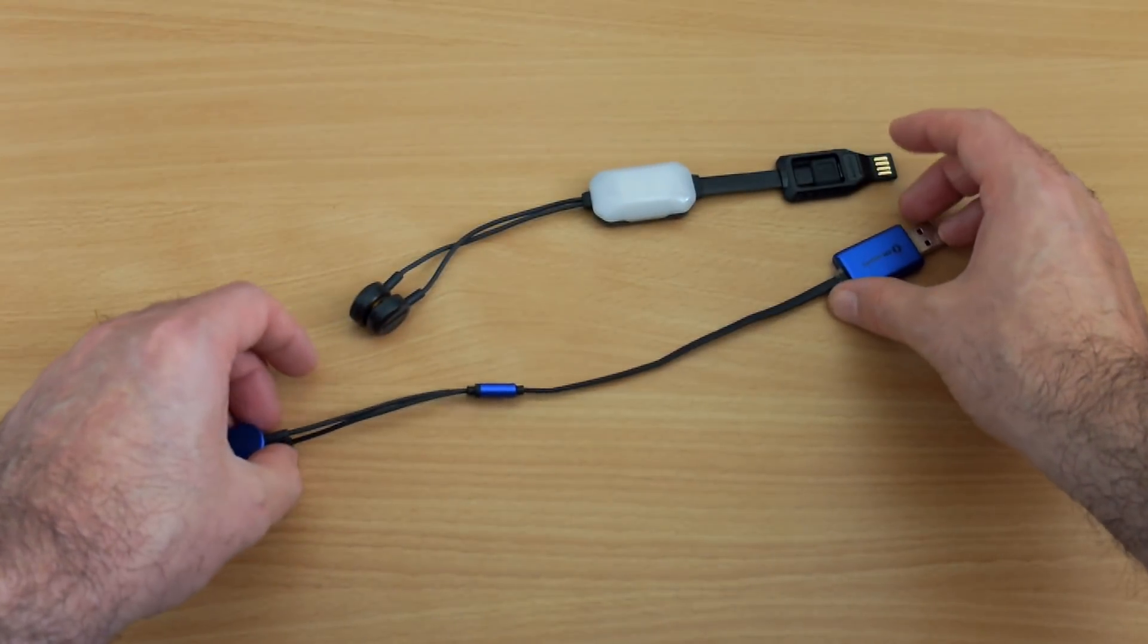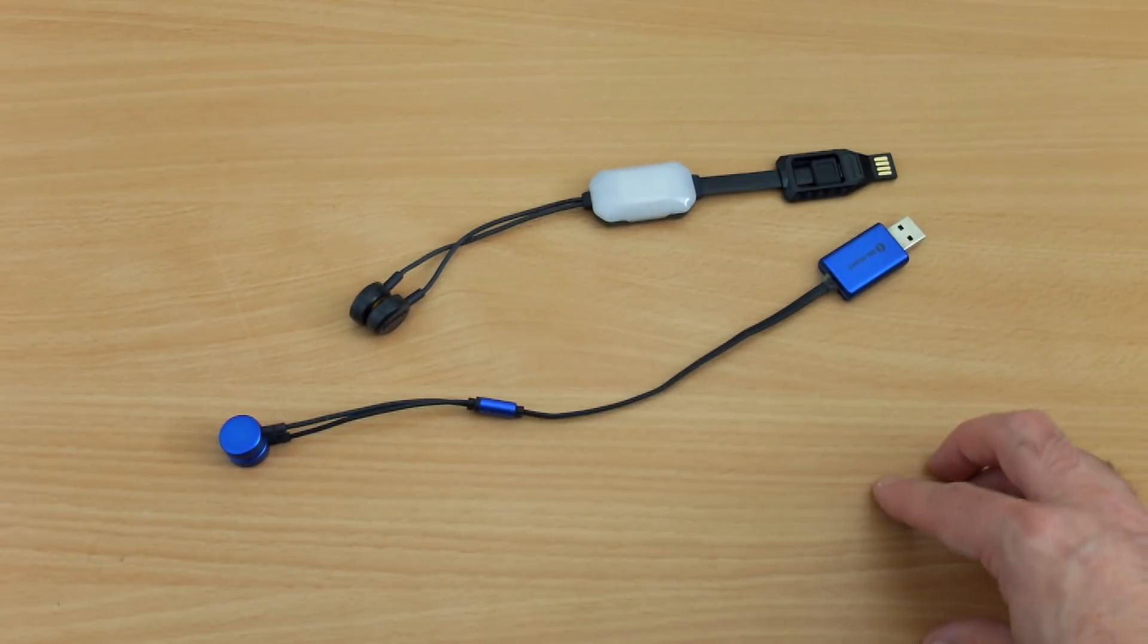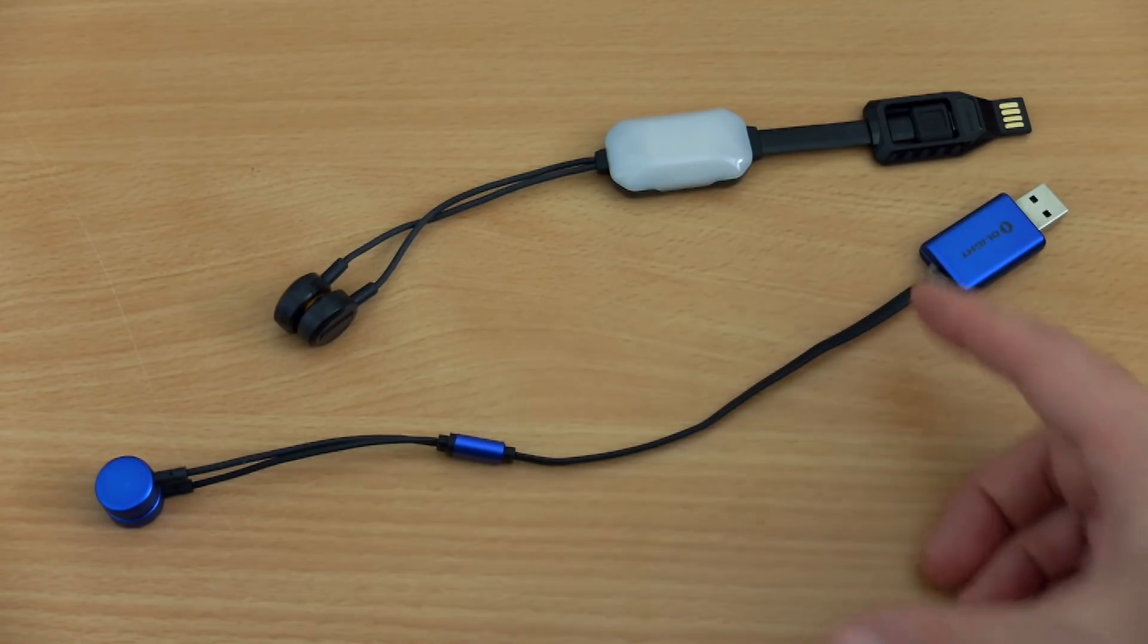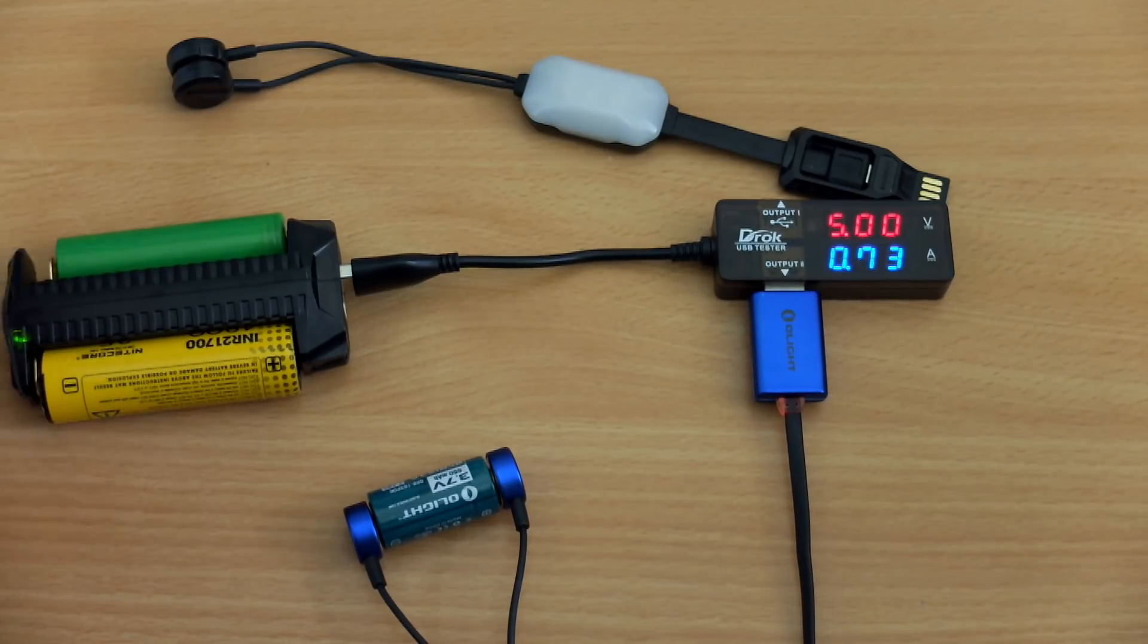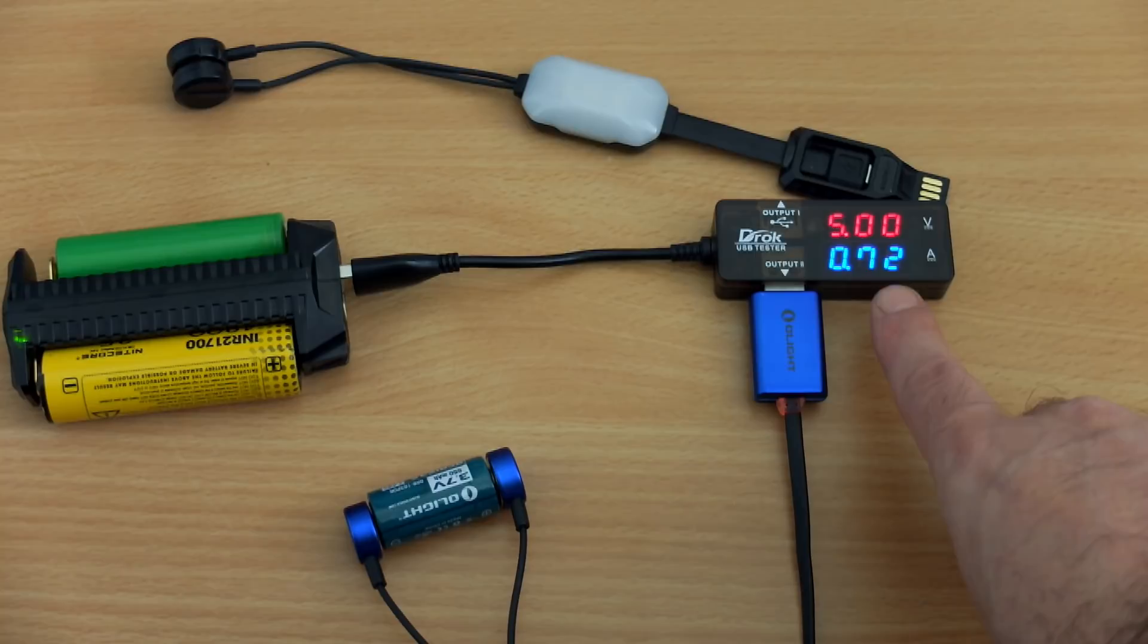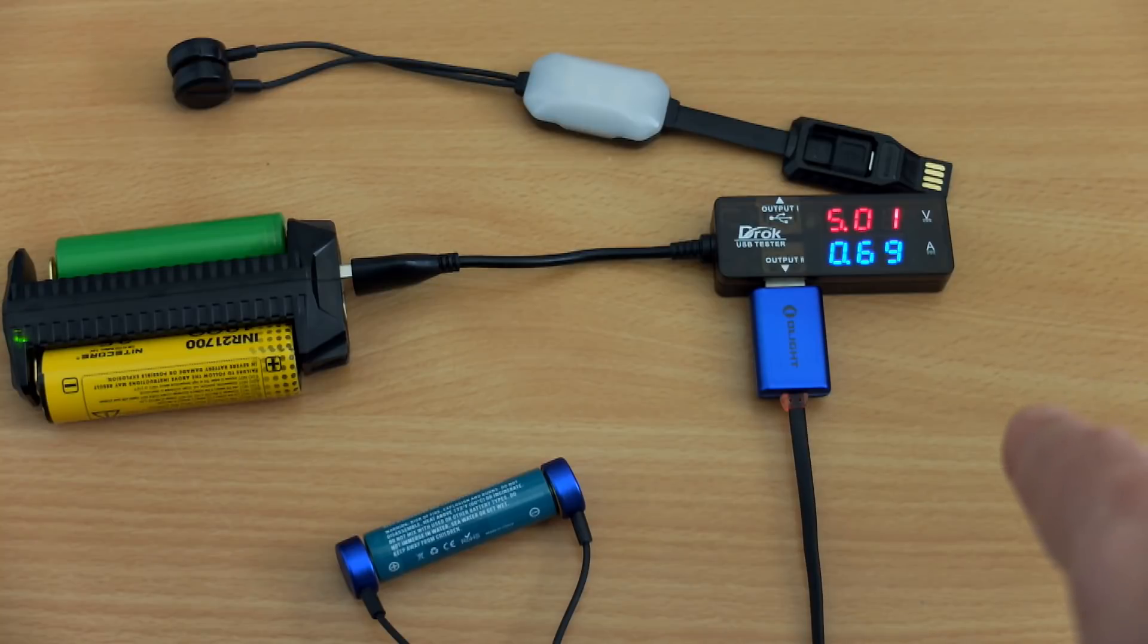Compared to the Olight magnetic charger, this does have a few advantages. The battery indicator as I already mentioned, you can't use the Olight as a power bank.